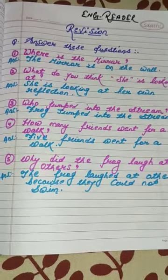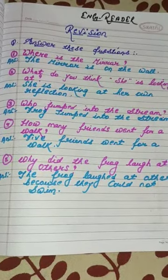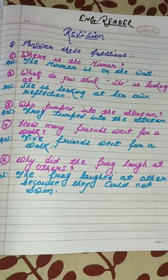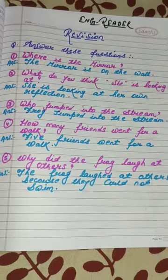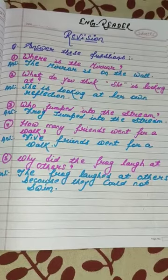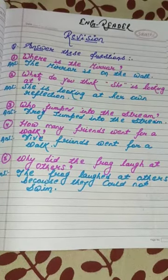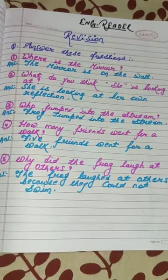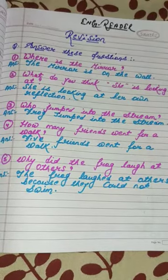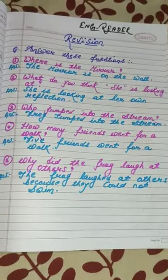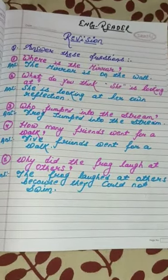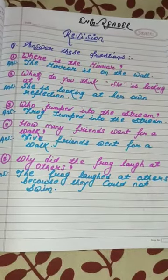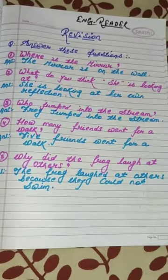Question number 5: Why did the frog laugh at others? Answer: The frog laughed at others because they could not swim. Learn these 5 questions and note down in your rough notebook.